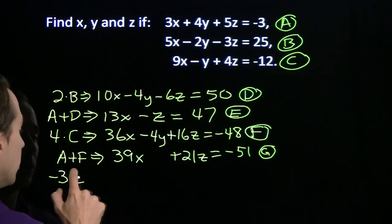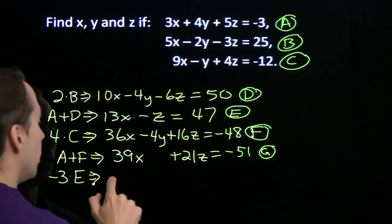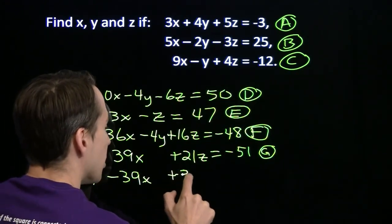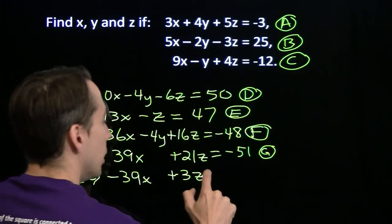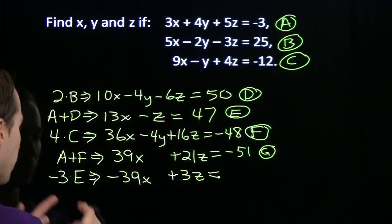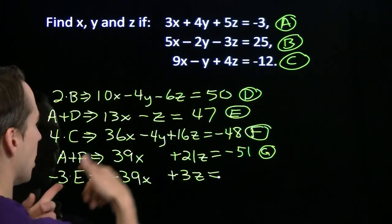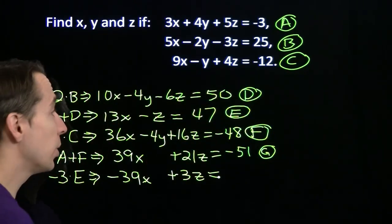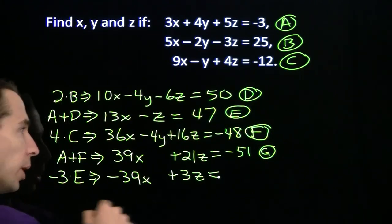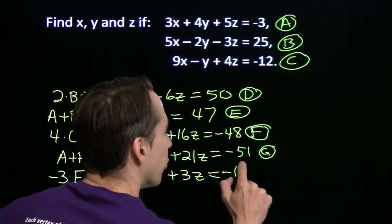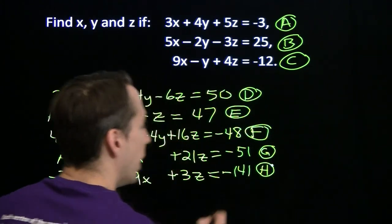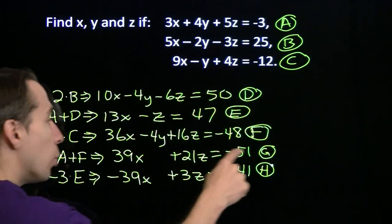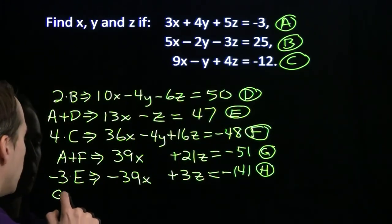Negative 3 times E gives us minus 39x plus 3z equals—multiply this by 3: 3 times 40 is 120, 3 times 7 is 21, add those together we get 141, it's multiplying by a negative 3, so this is minus 141. We'll call that H. Now we've set up our elimination. We're going to add equations G and H.